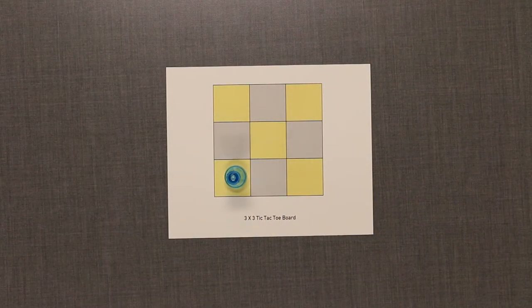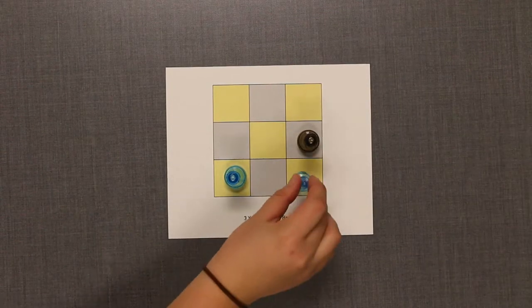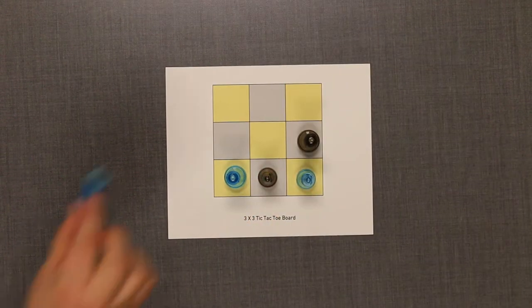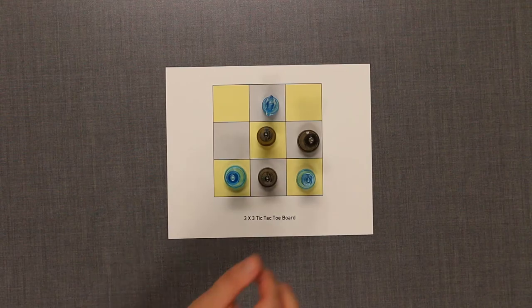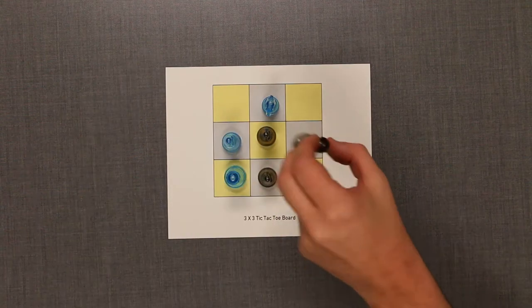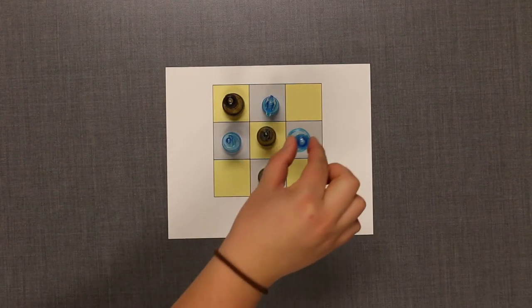There are three versions of this game. The first version is the 3x3 game. On your turn, place a game piece in one of the spaces on the 3x3 board. Alternate turns until both players have played all three of their game pieces.